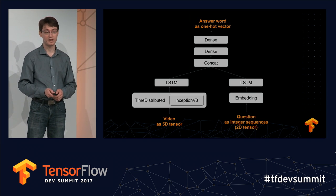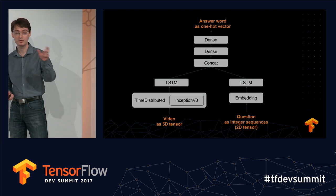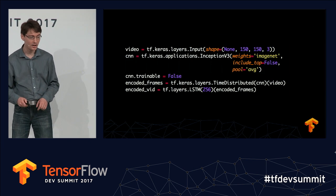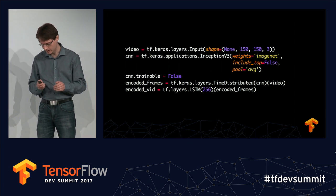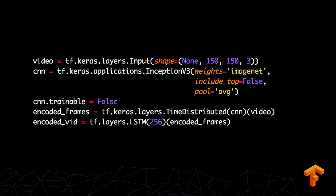We train that with a target answer word encoded as a one-hot vector. The implementation is very simple — the video encoder is just five lines. In the first line, you're specifying the shape of your video input, a 5D tensor. The first axis, set to none, is the time axis — set to none because we want it to be variable, allowing the model to process videos of any number of frames. Then you have the shape of a single frame: a 150 by 150 RGB image, so a tensor that's 150 by 150 by 3.